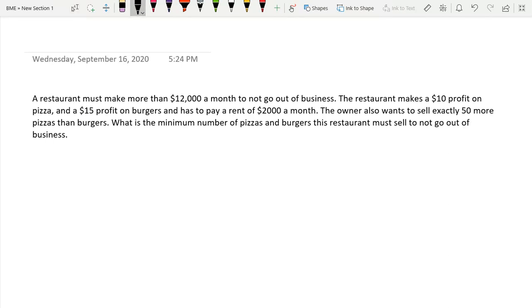So anyways, we have a restaurant must make more than $12,000 a month to not go out of business. The restaurant makes a $10 profit on pizzas and a $15 profit on burgers and has to pay a rent of $2,000 a month.